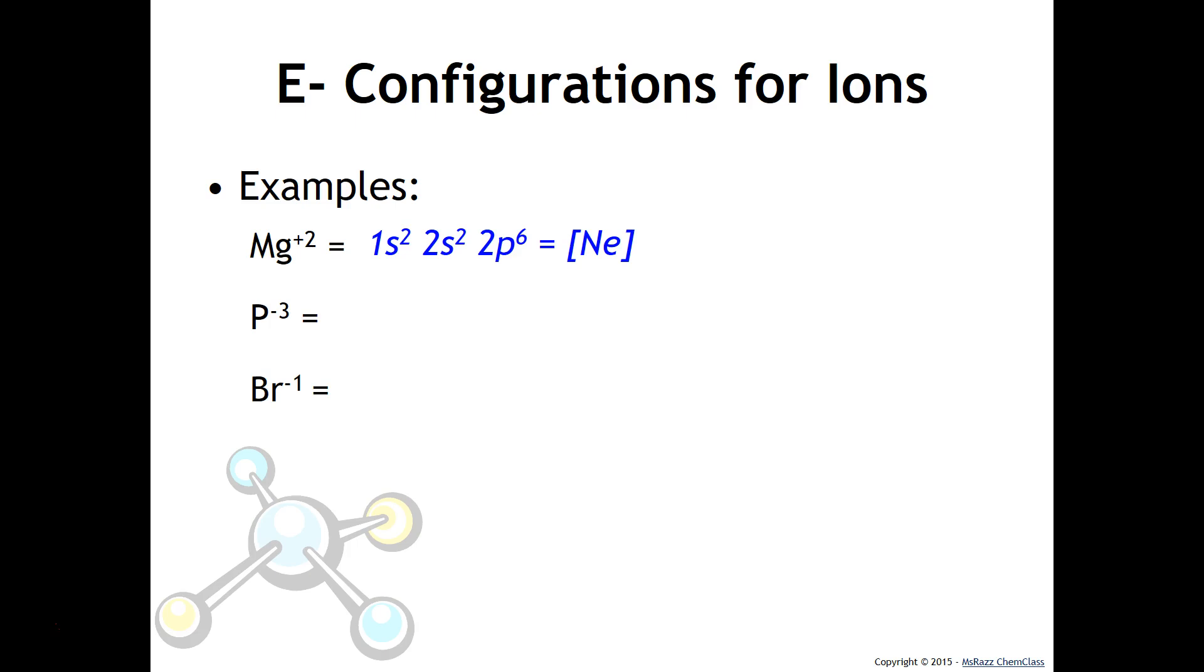For the phosphide ion, P with a 3- charge, the electron configuration would look something like this, and it would be isoelectronic with argon, or have the same electron configuration as argon. Last but not least, we have the bromide ion. That would be the configuration for the bromide ion, and it would be isoelectronic with krypton.